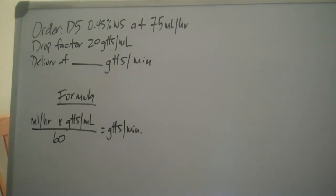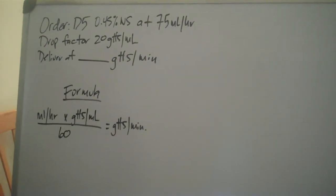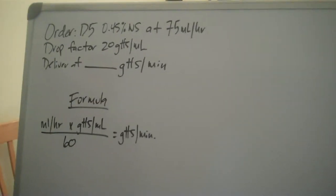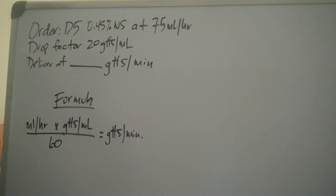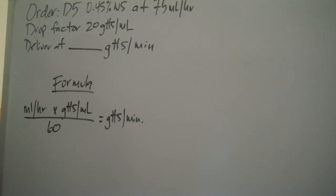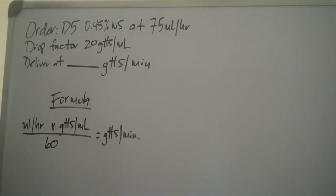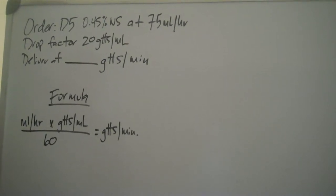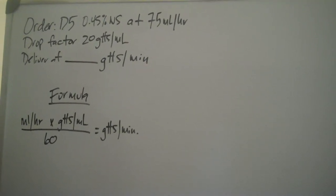Hi and welcome to MedMath for Nurses. Let's see what we got here. Our order, 5% dextrose and half normal saline, is running at 75 milliliters an hour. Our drop factor tubing is 20 drops a milliliter. We're going to deliver at how many drops a minute?